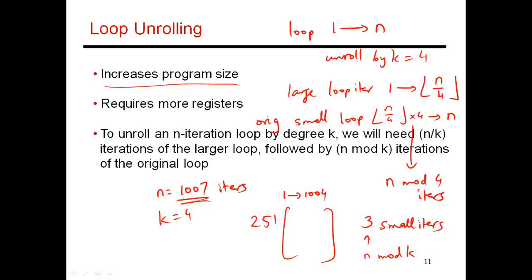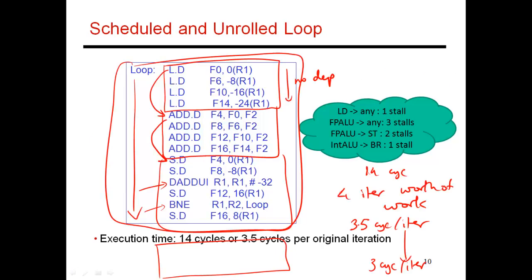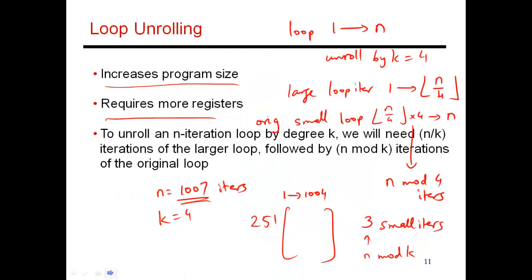So what I'm getting to is the fact that with loop unrolling, you not only need the original loop, you also need a larger version of the loop. So that leads to an increase in program size. It also requires more registers. Because if you look at this code over here, note that the loads were now being done to F0, F6, F10, and F14. F6, F10, F14 were registers that I was not using before. And similarly, there are more registers being used over here. So loop unrolling definitely puts much greater pressure on the register file. So those are the problems with loop unrolling.